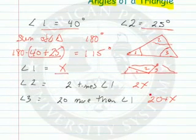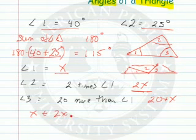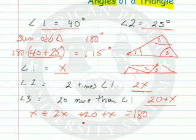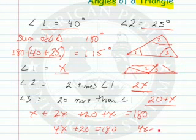Well, what we'll do is we'll take the three angles. x plus the 2x plus the 20 plus x, and that would be equal to 180. So what do you have? You have 4x plus 20 equals 180. So you have 4x equals 160. So x equals 40.